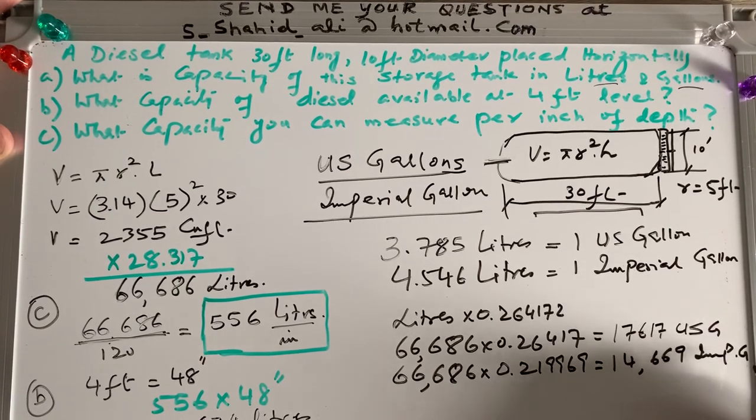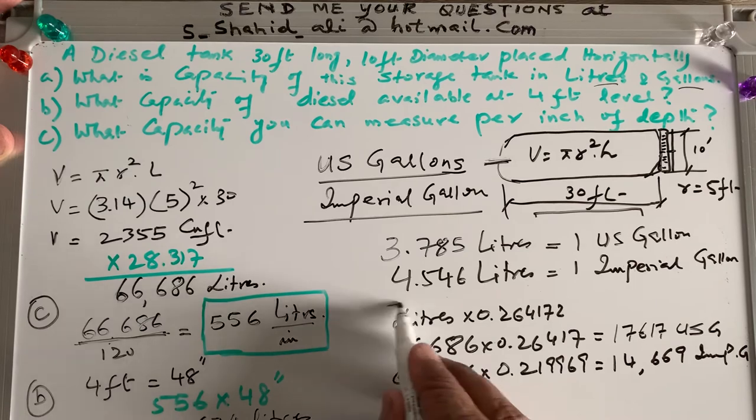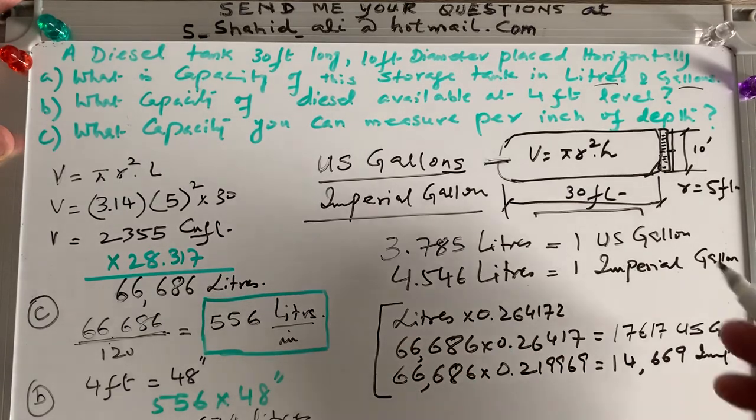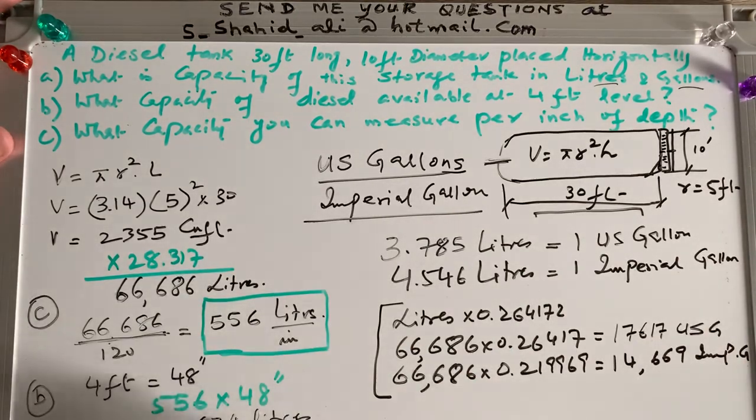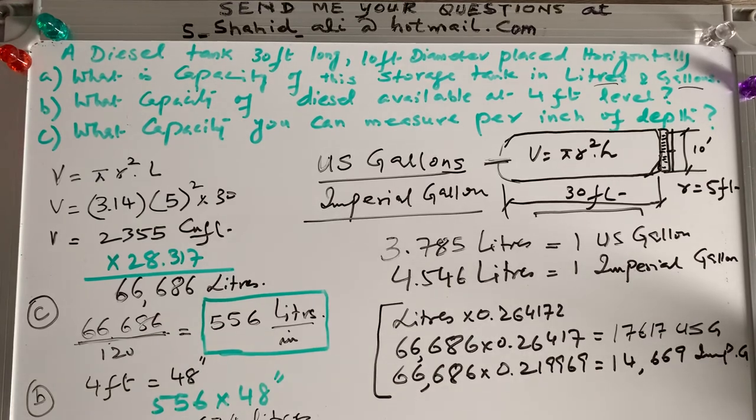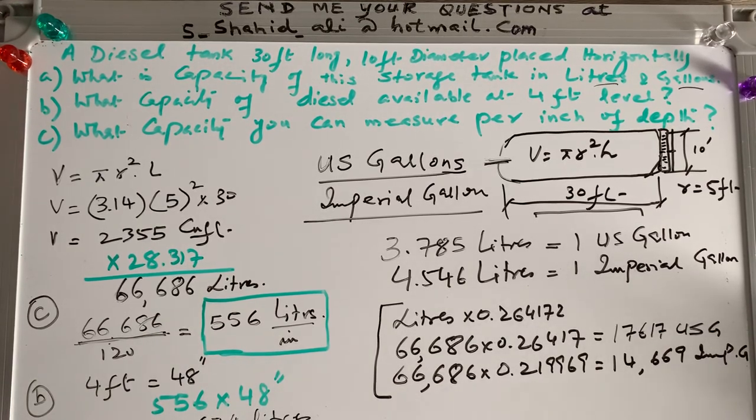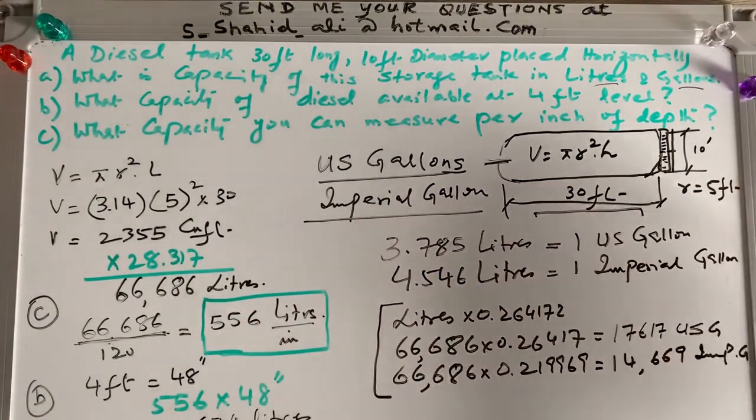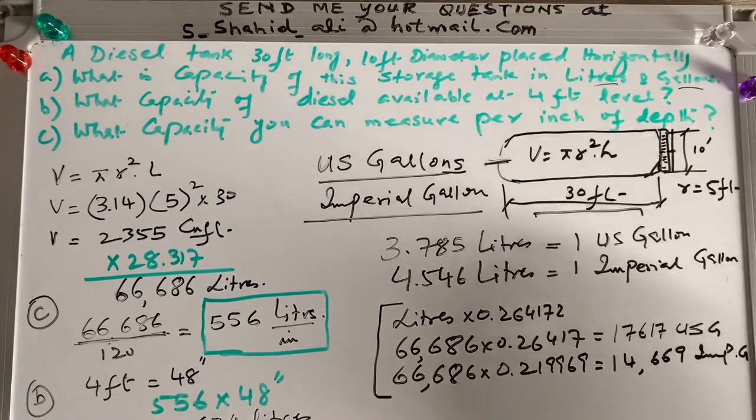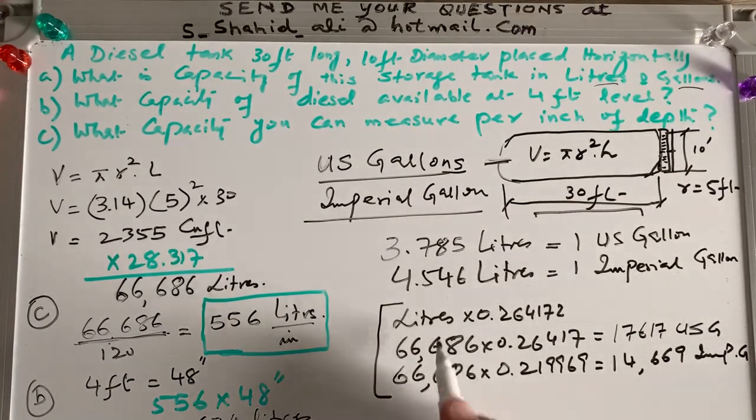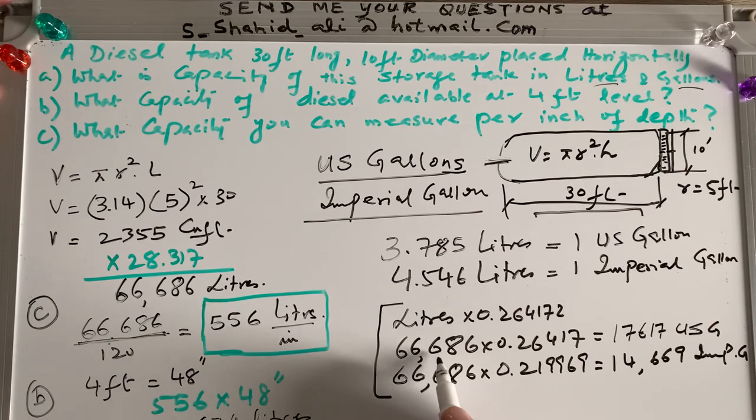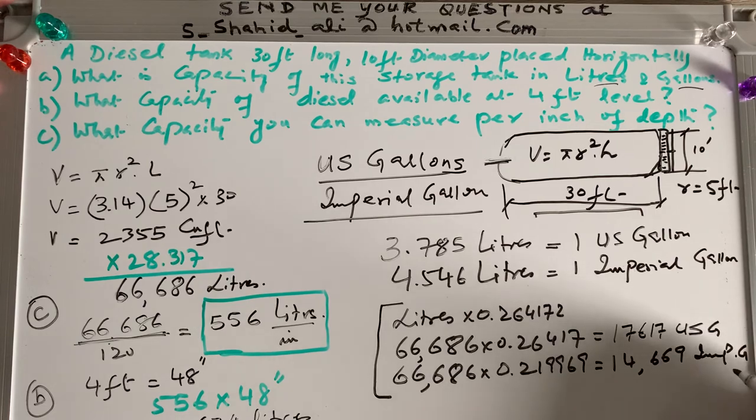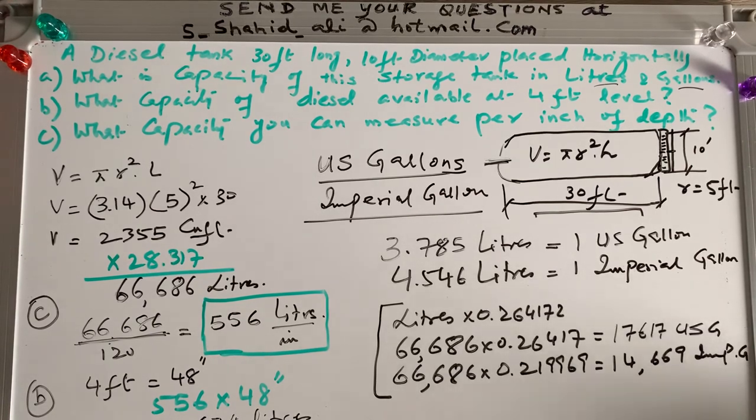If I want to convert these US gallons into imperial gallons, so I have to multiply the same 66,686 times 0.219969. And I will be having imperial gallon, 14,669 imperial gallon. So we have those capacities. Or if you want to talk about all of these, like in imperial gallons or in US gallons, you can convert it by yourself. But here in the first part, what is the capacity of this storage tank in liters and gallons? So I convert both, like liters were 66,686, and I convert them in US gallons and imperial gallons. So remember these two conversion factors.